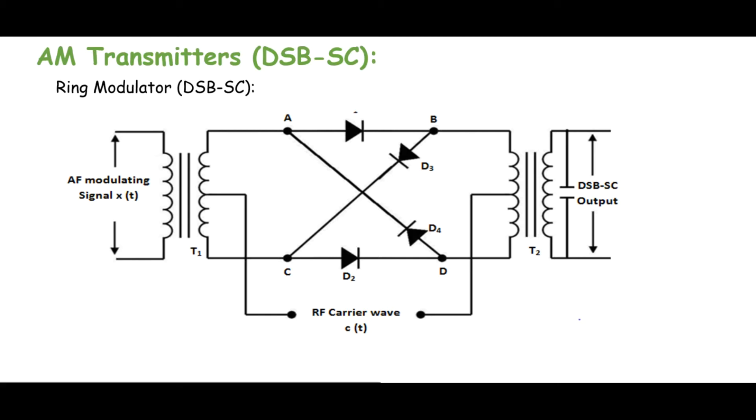Hello everyone, in line with our discussions on AM transmitters for DSB-SC type modulators, today we will discuss ring modulator. Here follows the schematic diagram of ring modulator using diodes. It basically consists of four diodes in ring arrangement: D1, D2, D3, and D4.